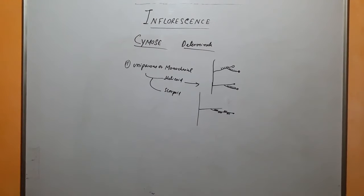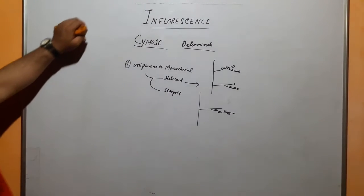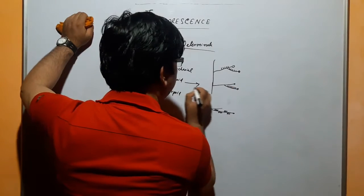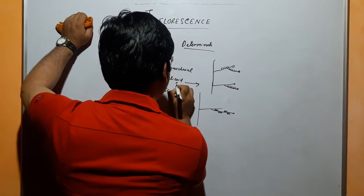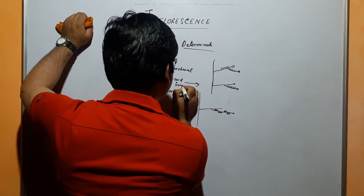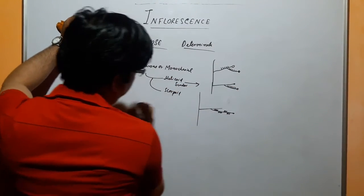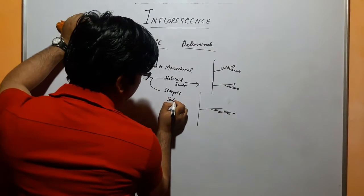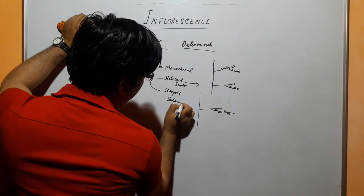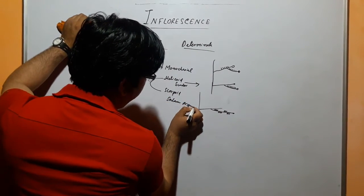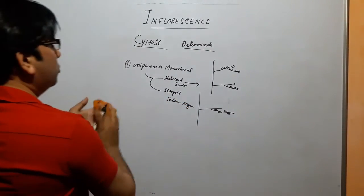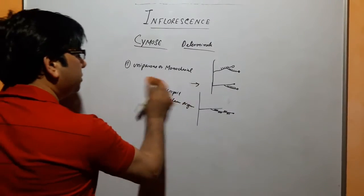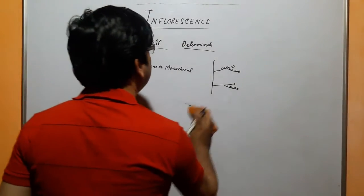The example of helicoid is sundew. For scorpioid type, here we have Solanum nigrum. So this was the first part of cymose.